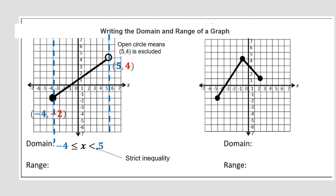Now let's look at the range. At the bottom of the graph we're at negative 2, and at the top we have positive 4, which is excluded due to the open circle. Applying the same thinking, the range is: y is greater than or equal to negative 2 but strictly less than 4.